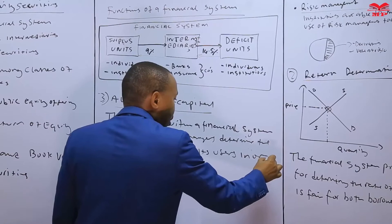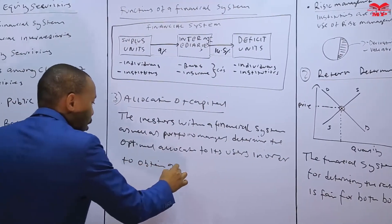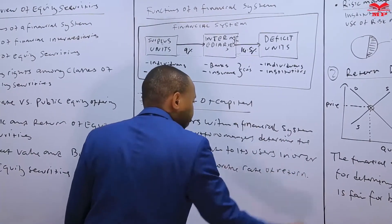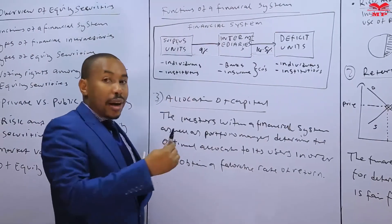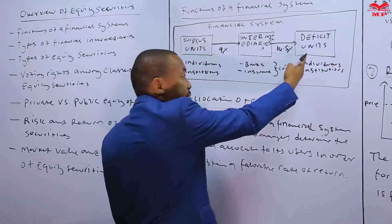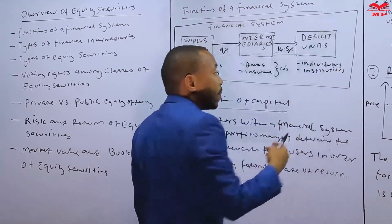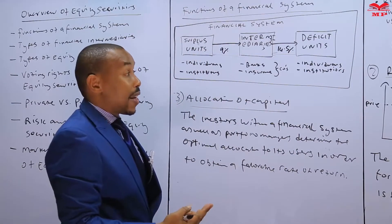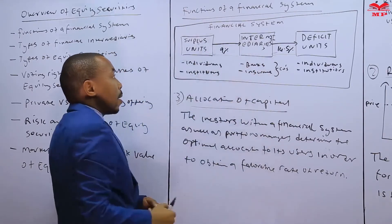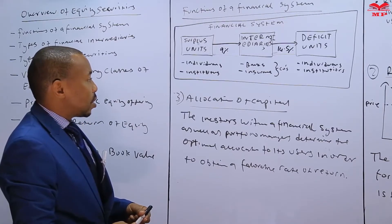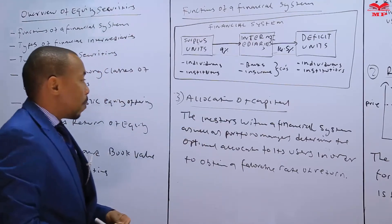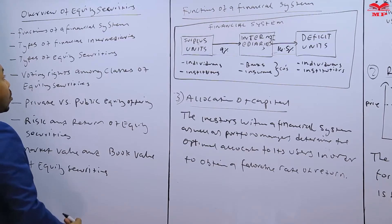Individuals who want the money will be provided the financing and will invest it in fixed income securities, equity securities, and other asset classes to get a rate of return, enabling them to pay the intermediaries, who in turn pay the surplus units. Those are the three major functions of the financial system: achievement of purpose, return determination, and allocation of capital.